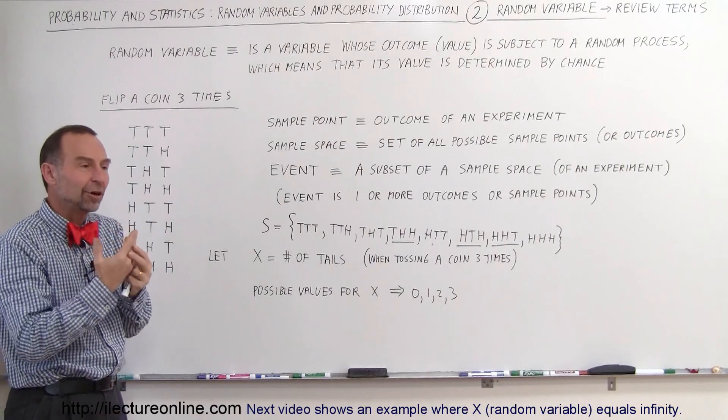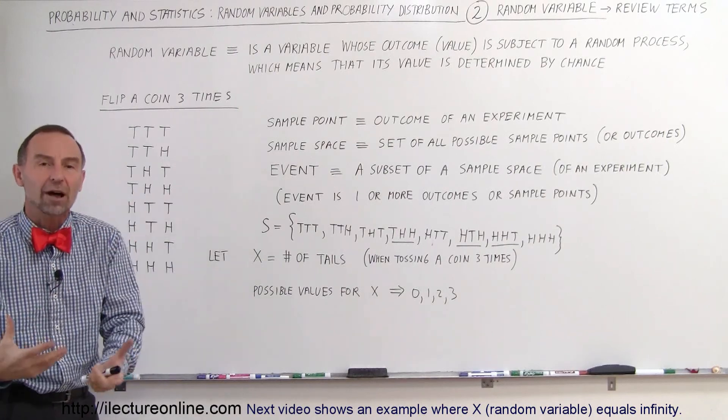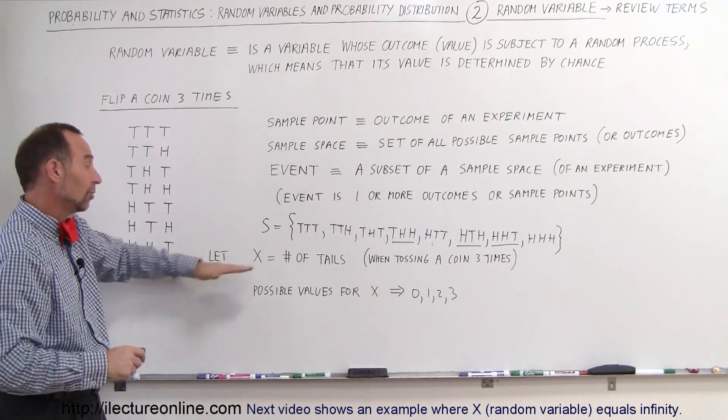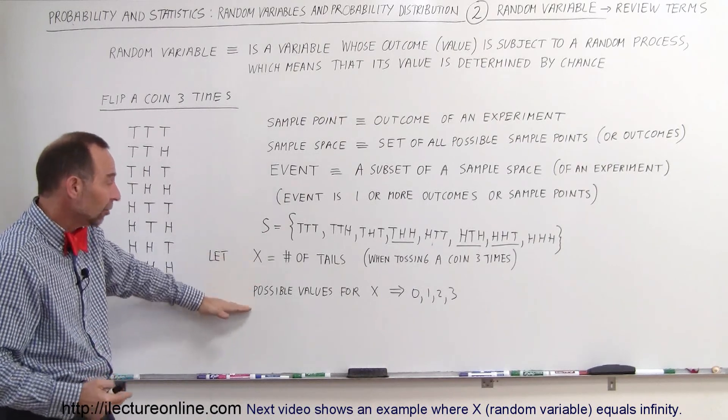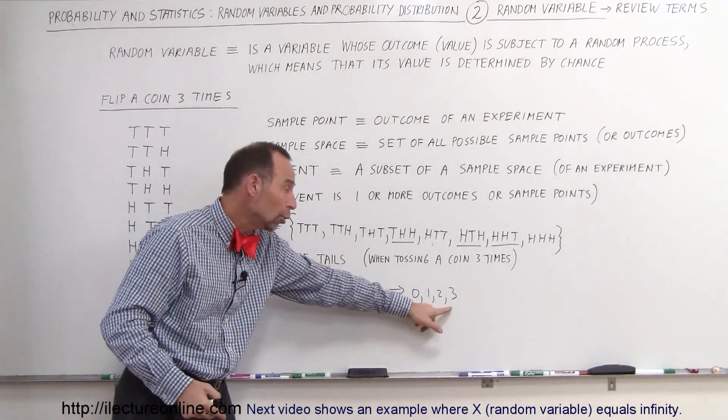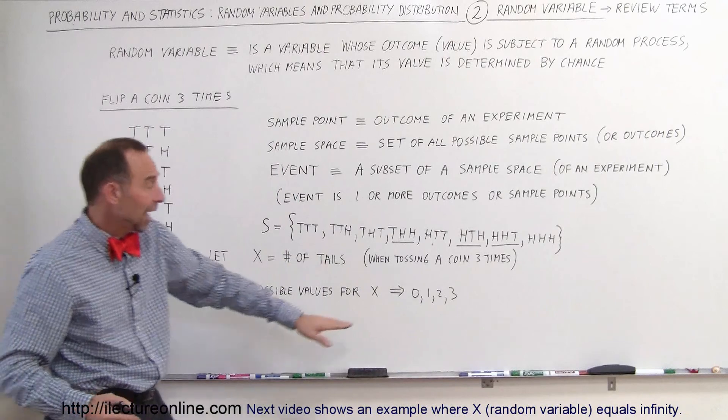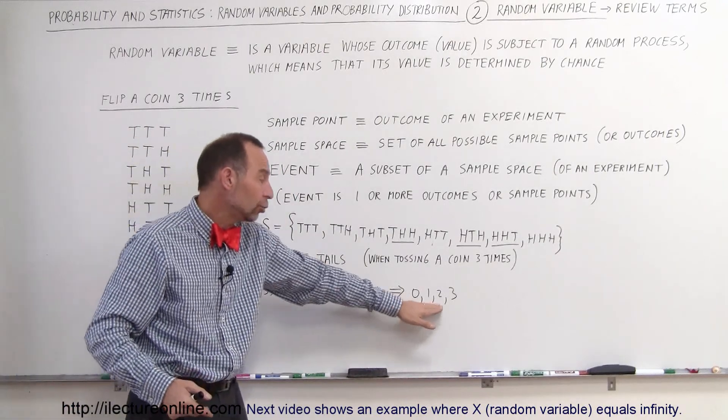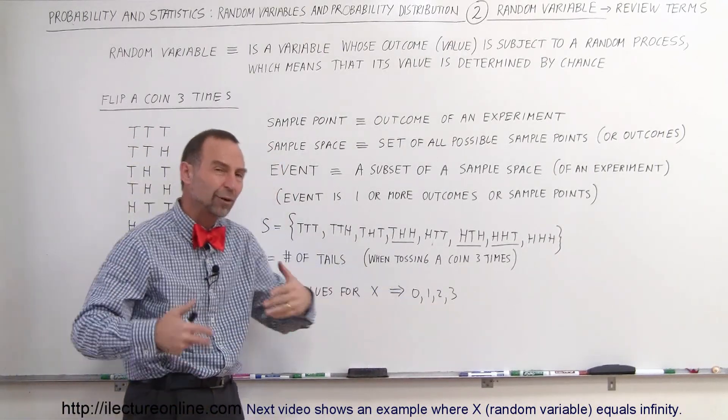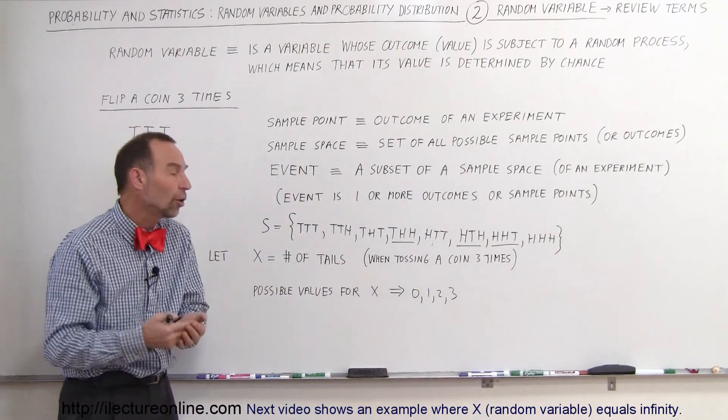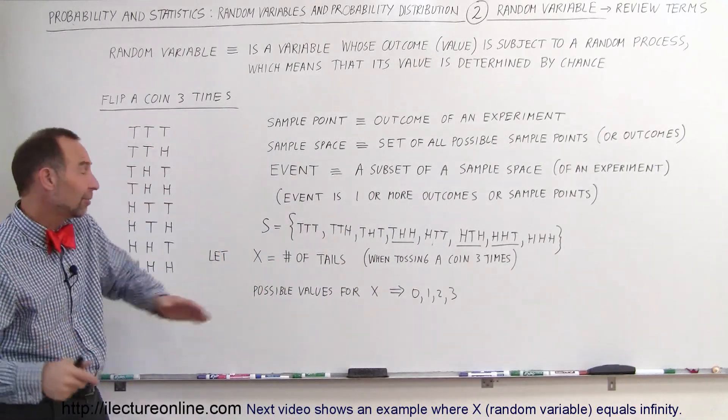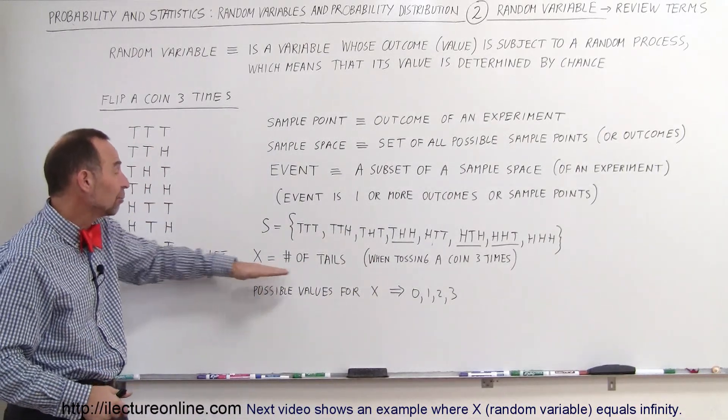A random variable has a number of possible values. And so in this case, the number of possible values are 0, 1, 2, or 3 because you could have 0 tails, 1 tail, 2 tails, or 3 tails. So therefore, X can take on any of those values when you toss a coin three times. And as we define, let X be the number of tails.